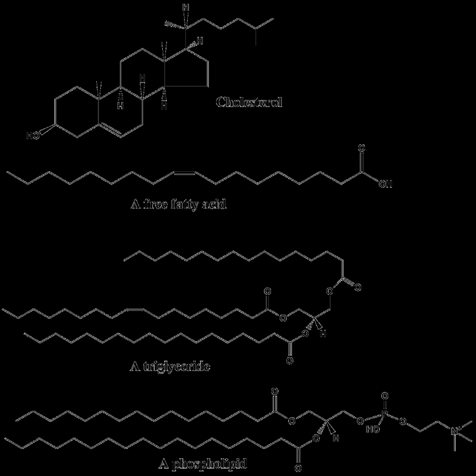Polyketides are synthesized by polymerization of acetyl and propionyl subunits by classic enzymes as well as iterative and multimodular enzymes that share mechanistic features with the fatty acid synthases. They comprise a large number of secondary metabolites and natural products from animal, plant, bacterial, fungal and marine sources, and have great structural diversity. Many polyketides are cyclic molecules whose backbones are often further modified by glycosylation, methylation, hydroxylation, oxidation, or other processes. Many commonly used antimicrobial, antiparasitic, and anti-cancer agents are polyketides or polyketide derivatives, such as erythromycins, tetracyclines, avermectins, and antitumor epothilones.